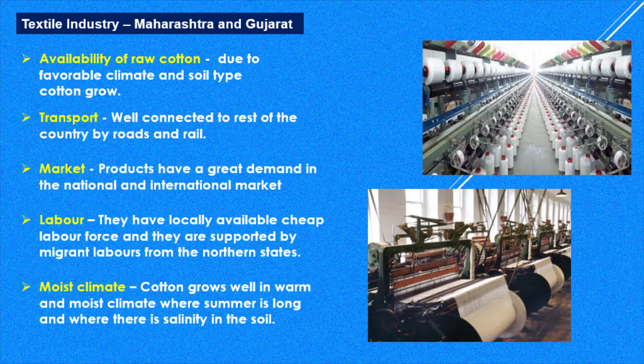The main states are Maharashtra, Gujarat, and Tamil Nadu. In Maharashtra it is Mumbai, though industries have shifted out as Mumbai is changing into a tertiary sector city. In Gujarat it is Ahmedabad. In Tamil Nadu it is Coimbatore. But today these industries are found in all important places across the country.